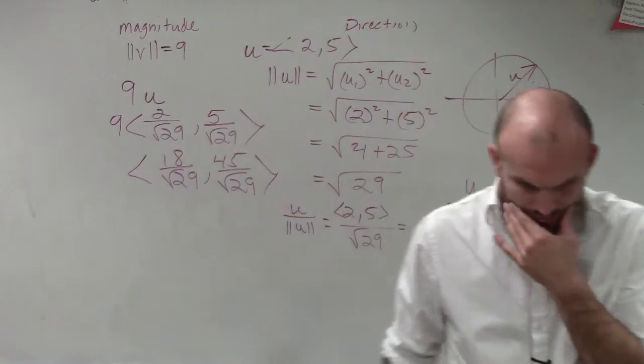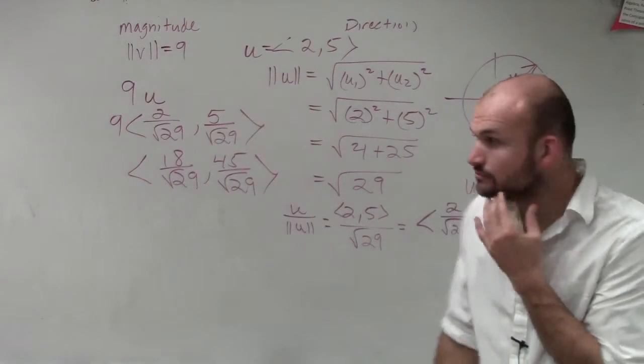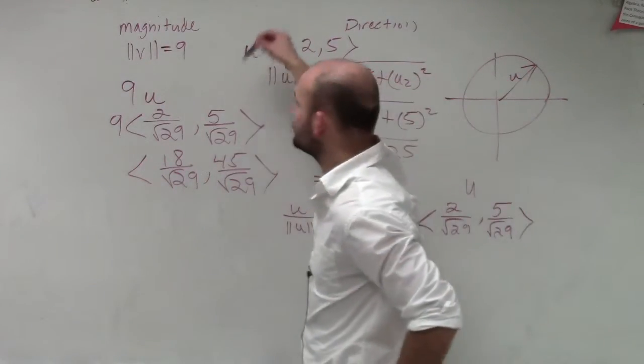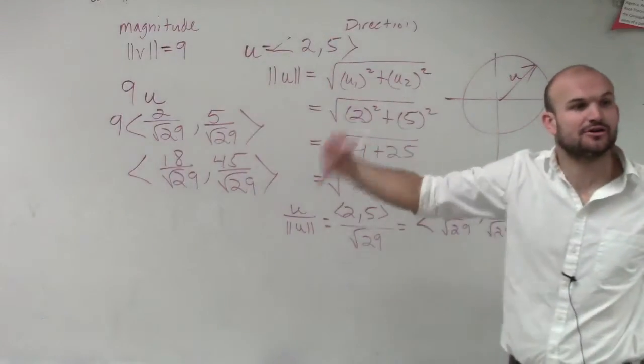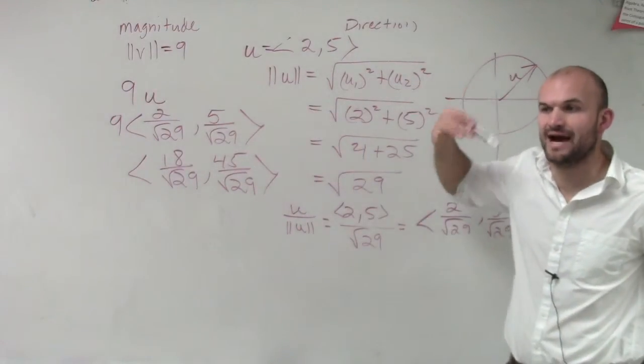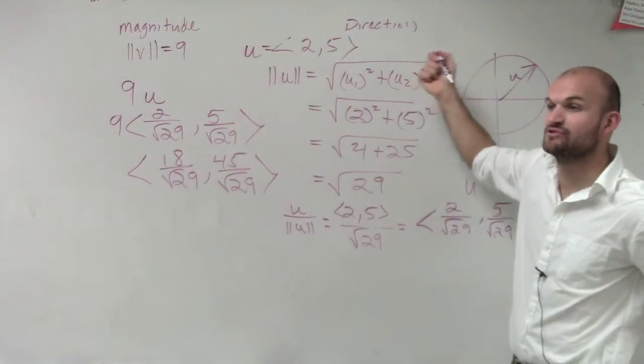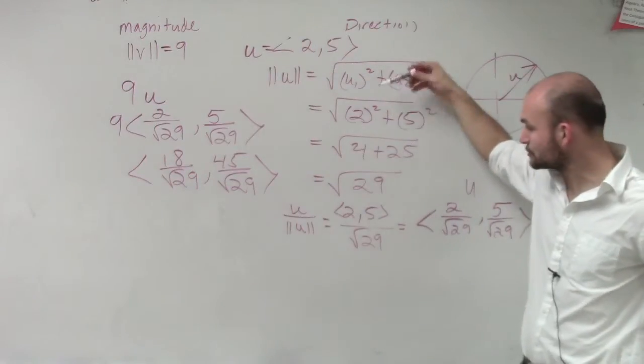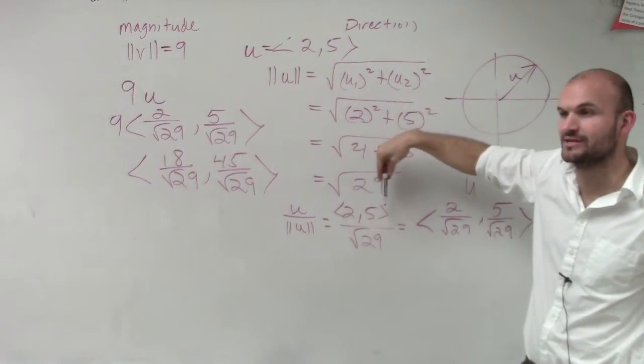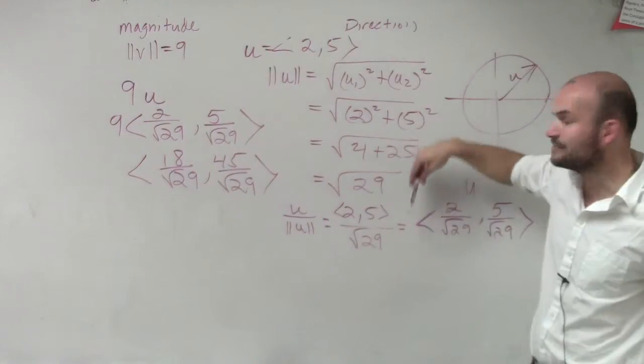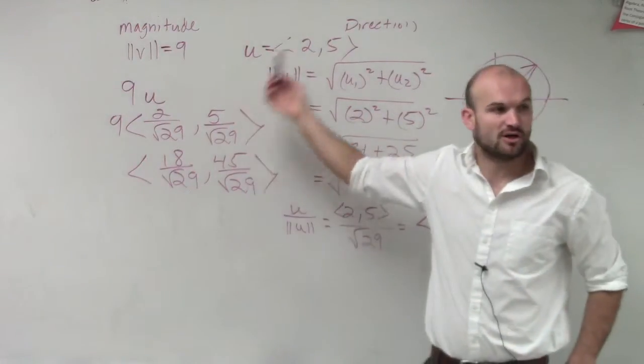Where did 9u come from? You take whatever your vector is—that's your direction. Now you're multiplying it by a magnitude of 9 because you want to have the same direction as the unit vector. So first you find what the unit vector is. This is not a unit vector, so we found what the unit vector was, then we multiply it by 9.